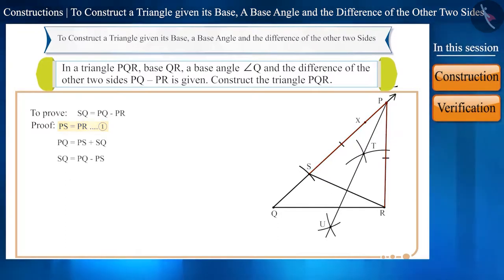Using equation 1, we can write it as follows: SQ is equal to PQ minus PR. That is, the length of side SQ is equal to PQ minus PR. Therefore, our construction is correct.